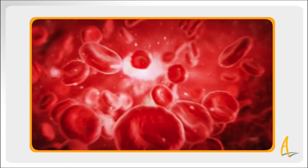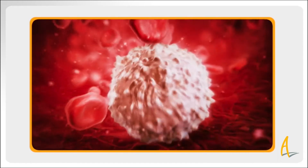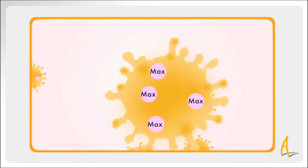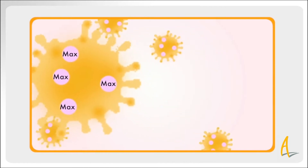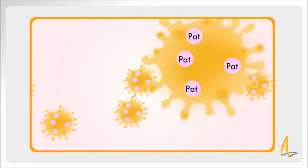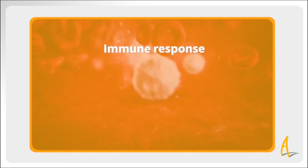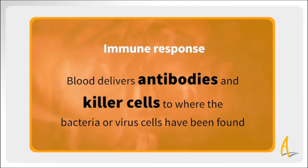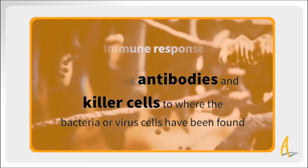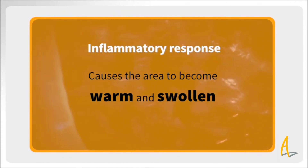Our immune system protects us from bugs, bacteria and viruses. In simple terms, all cells have a substance on their surface called antigens, and all cells in your body have the same surface antigens. It's as if they're all wearing a name badge with your name on it, so that your body knows that these cells are not invaders from outside. If a cell is found in your body with a different antigen or name badge — an intruder like a bacteria or a virus — your immune system will produce antibodies and killer cells to attack it. This attack is called an immune response, and during an immune response, your blood delivers lots of antibodies and killer cells to where the bacteria or virus cells have been found. This process is described as an inflammatory response, and it causes the area to become warm and swollen.